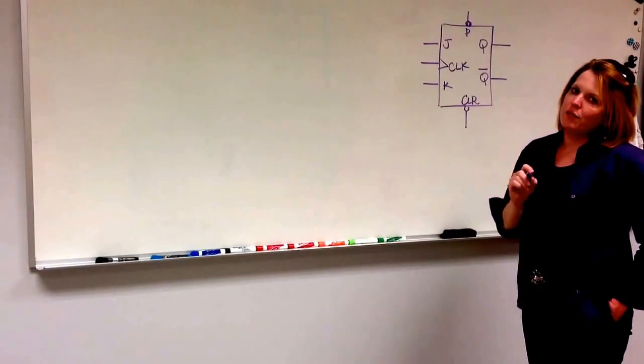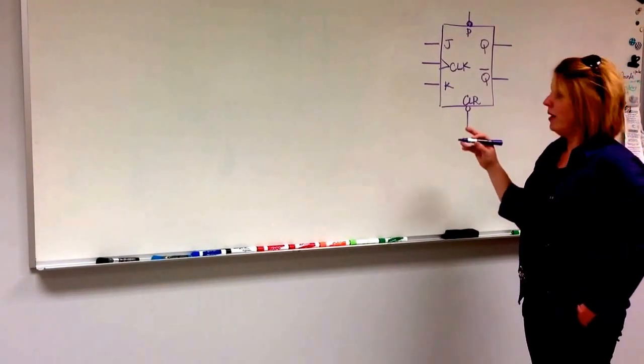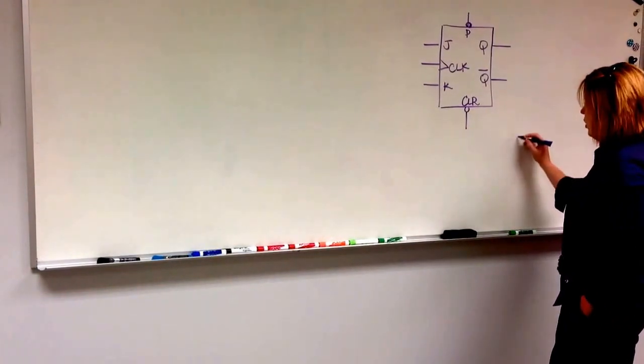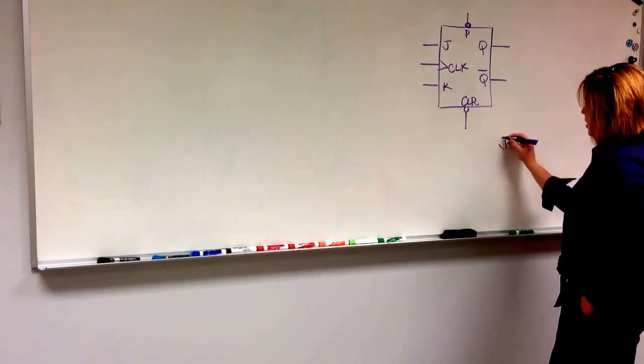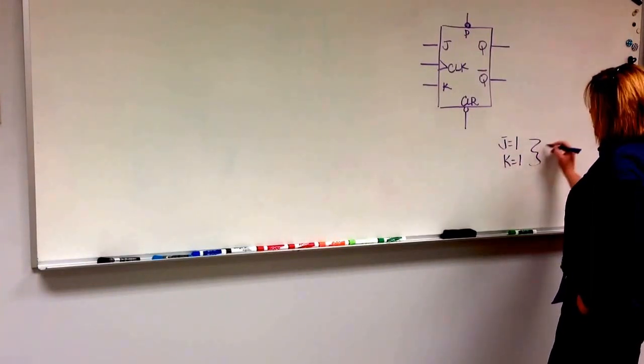So I don't know if you remember from your diagram, but a JK flip flop, if both inputs are 1, we say that is the toggle state.